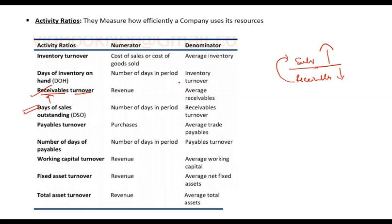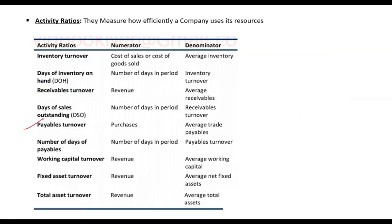Days of sales outstanding is simply 365 divided by receivables turnover, converting the receivables turnover ratio into days. It tells you how many days it takes customers to pay. If it is lower, that is good. Payables turnover tells you how much time you take to pay your suppliers — it is purchases divided by average payables. Again, to convert it into days you divide by 365.